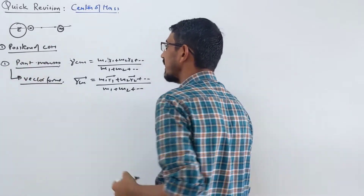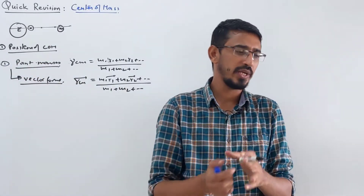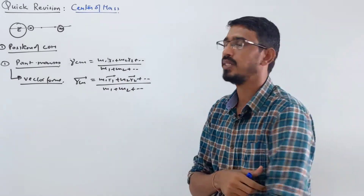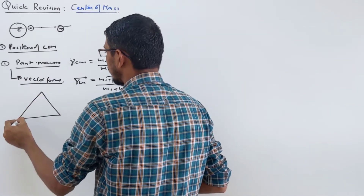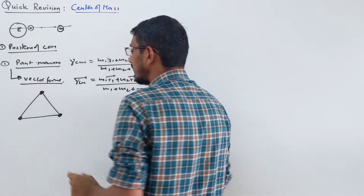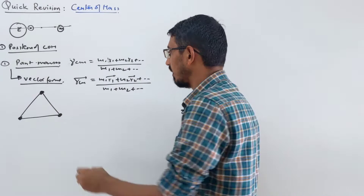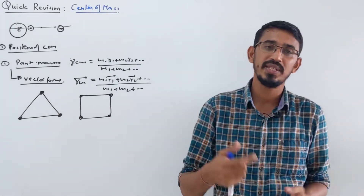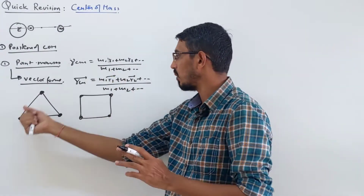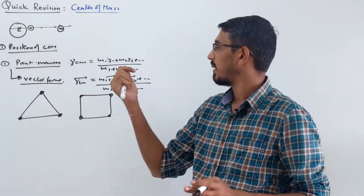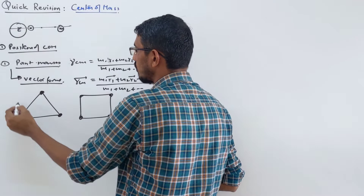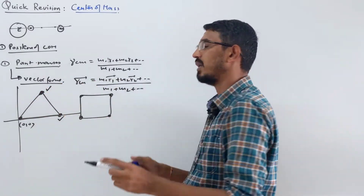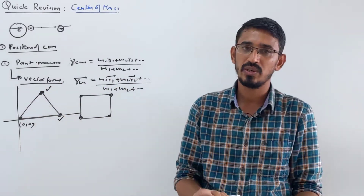Generally in point masses questions, they can give a direct setup — like 2 kg placed at this coordinate, 5 kg placed at that coordinate, find the position of center of mass. But often they give a pictorial form — like 3 masses placed at the 3 corners of a triangle, square, or rectangle. In this type of question, we have to choose a coordinate system and write the coordinates of all masses with respect to the origin, then apply the same formula. You find the x-coordinate, then y-coordinate, then z-coordinate using the same formula.